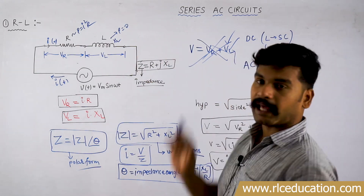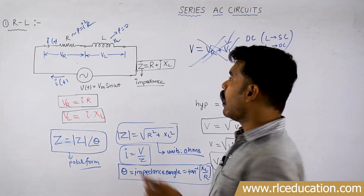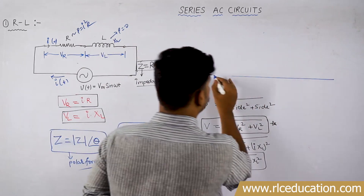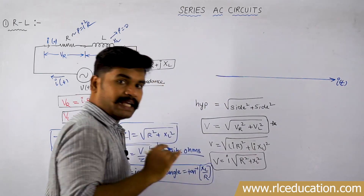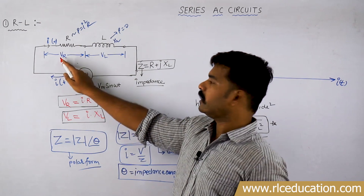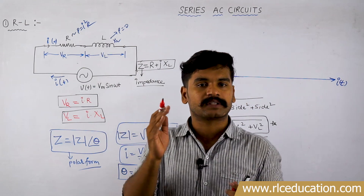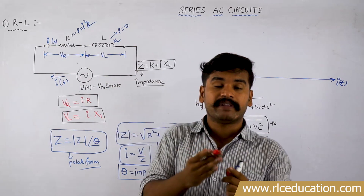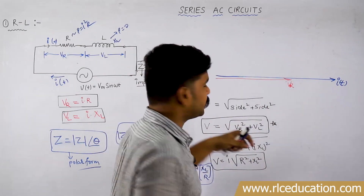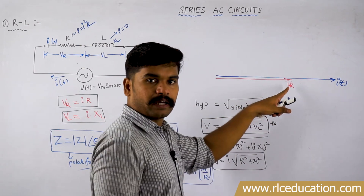In both R and L, one quantity is common — that is current. So let me take current as a base or reference quantity and see how the voltage across the resistor, inductor, and total voltage are behaving. I will take the total supply current I(t) as the reference and draw the phasor diagram. We already concluded that the voltage across the resistor and the current through it are always in phase — the phase angle between them is 0 degrees. So Vr is drawn along the same direction as I(t).